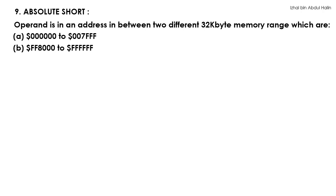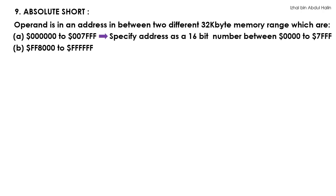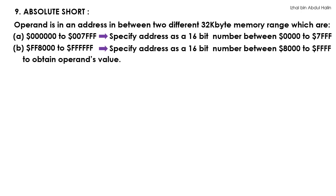If it lies in between 0 to 7FFF, you will specify the address as a 16-bit number between that range in order to obtain your operand. However, if the operand lies in between FF8000 to FFFF, you will specify the address as a 16-bit number between that range. You do not have to specify it as the exact 24-bit number.